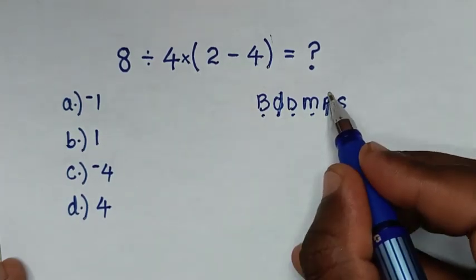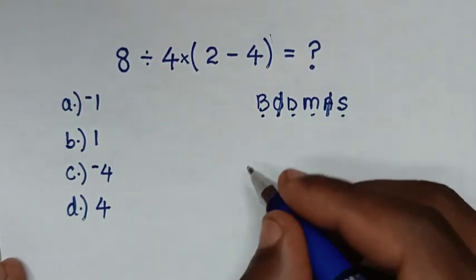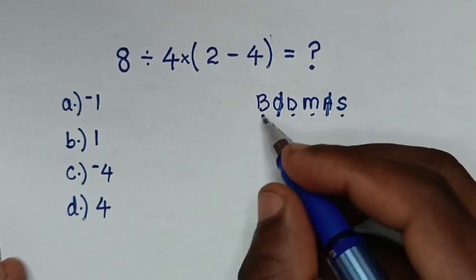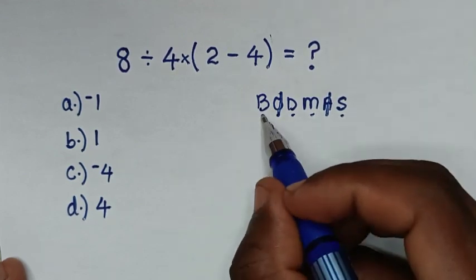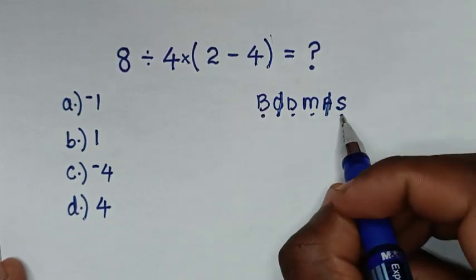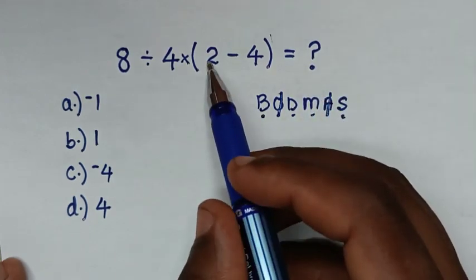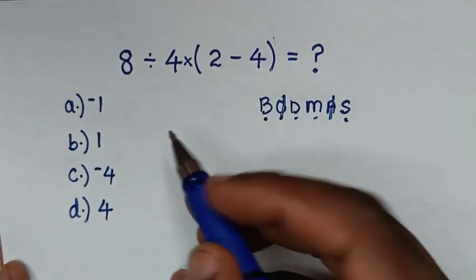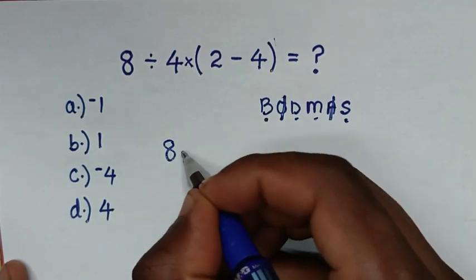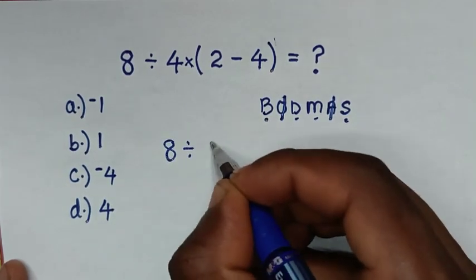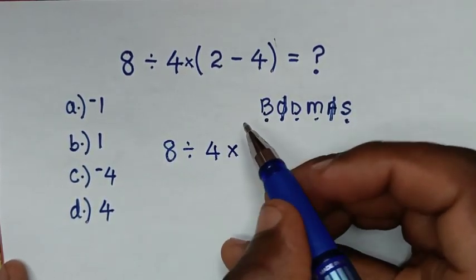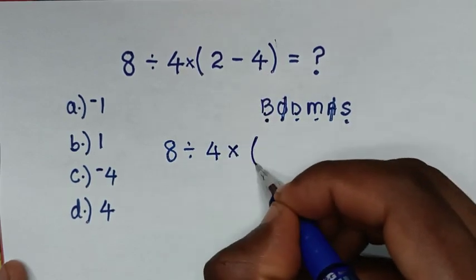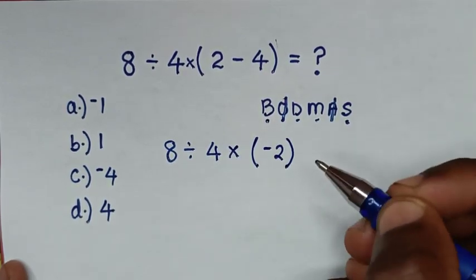A is addition — we don't have addition. So we start to deal with this bracket. Within the bracket, we have subtraction: 2 minus 4 is negative 2. So it will be 8 divided by 4, then times negative 2.